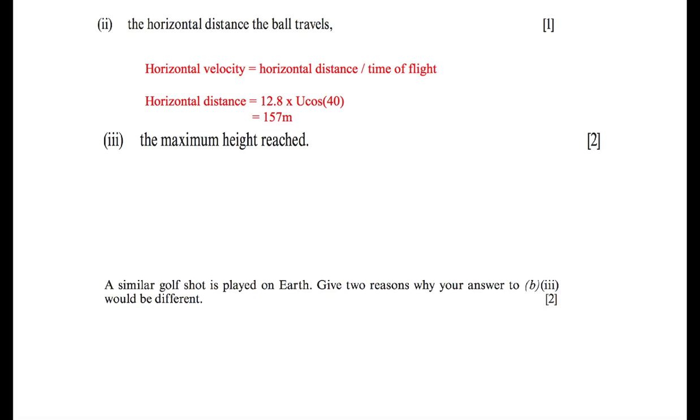This part wants us to find out the horizontal distance the ball travels. So in this case, we actually just use the horizontal velocity is equal to the horizontal distance divided by the time of flight. This just rearranges to the horizontal distance is equal to 12.8 times by U cos 40. That's equal to 157 meters.